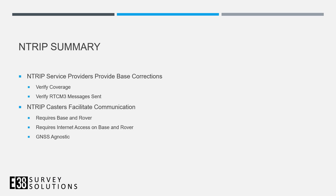To summarize, if you're looking for NTRIP service providers in order to use their base corrections, verify that they have good coverage in your area and that they are sending RTCM3 messages. If you want to extend your range or if you want to send corrections across different brands of receivers, you may want to use an NTRIP caster. My name is Joe and thanks for joining.